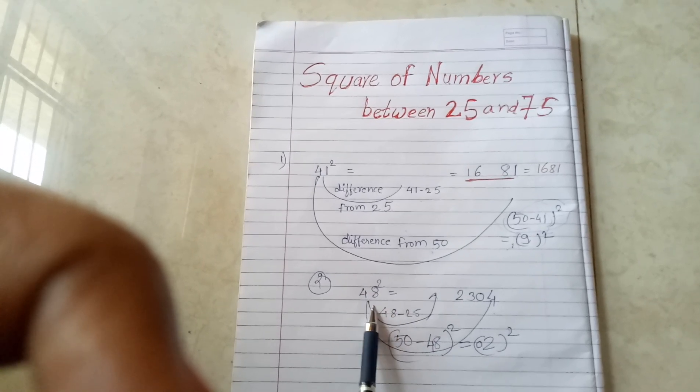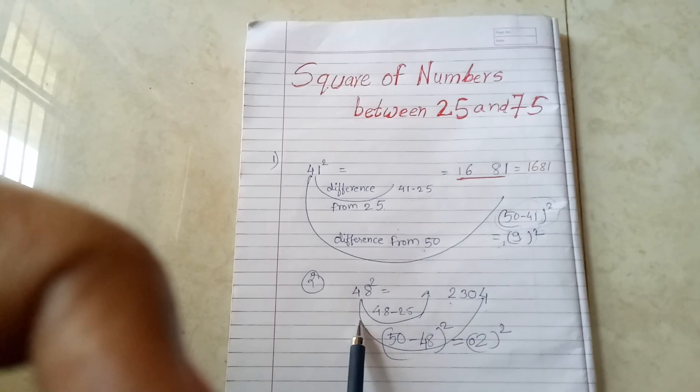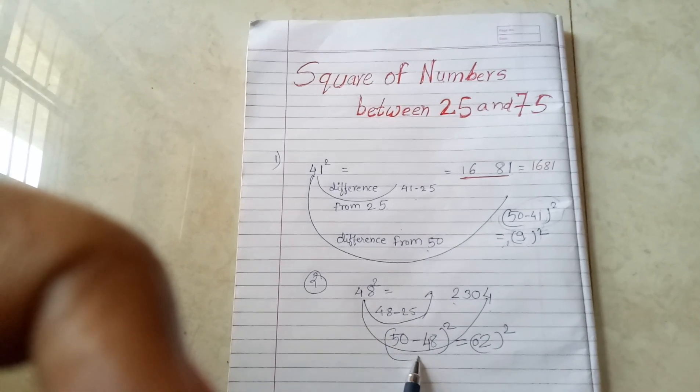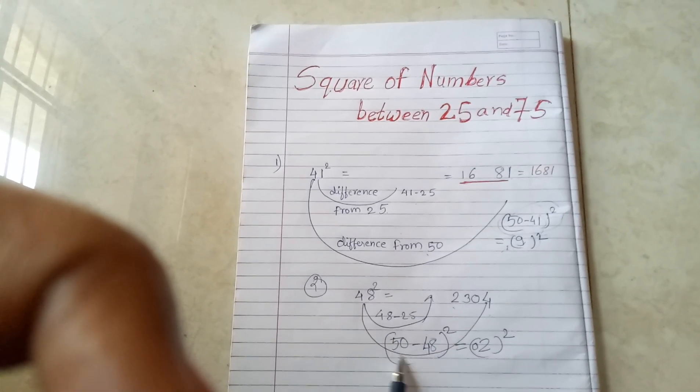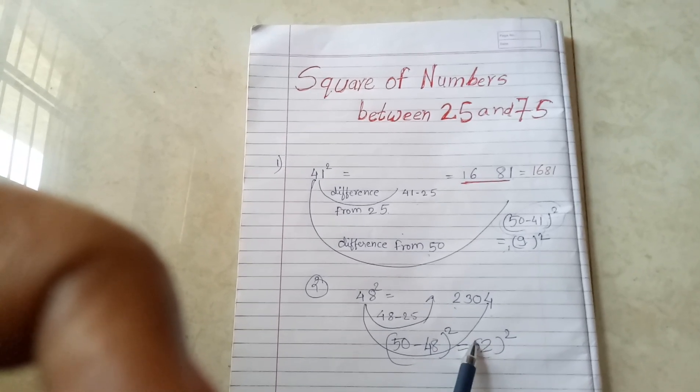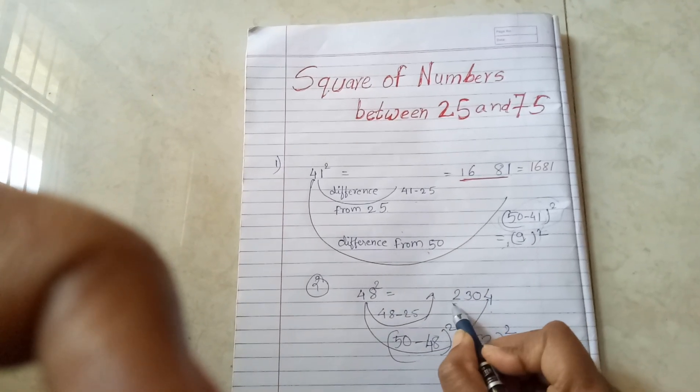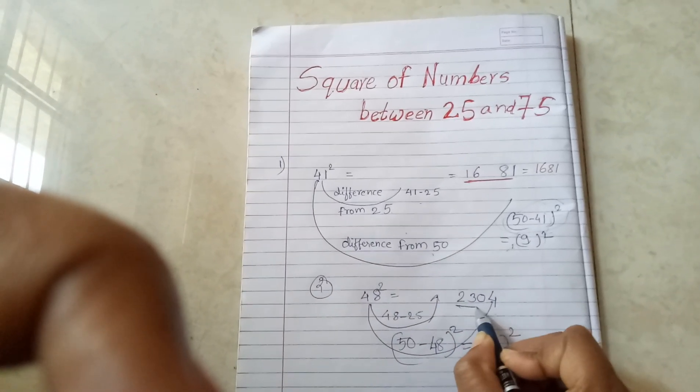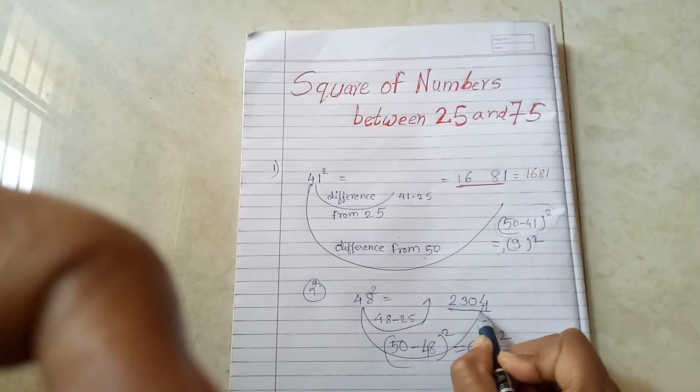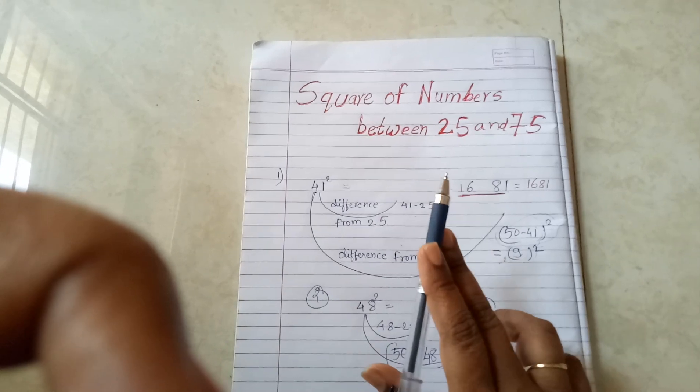Now again, one more example: square of 48. That is 48 minus 25, you will get 23. The next step is 50 minus 48 square. Square of this 2 is 04. So your first step answer is 23 and second step answer is 04, so your final answer is 2304.